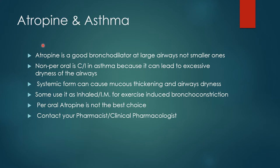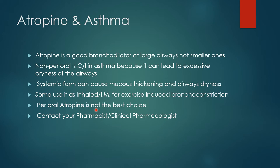Let's go through some facts when it comes to the use of atropine in asthmatic attacks. Though atropine is a good bronchodilator, that will happen at large airways only — it is not a good bronchodilator at smaller airways. Non-parenteral atropine is contraindicated in asthmatic attacks because it can lead to excessive dryness of the airway. The systemic form can cause mucus thickening and airway dryness. Some use it in the inhaled form or given intramuscularly for exercise-induced bronchoconstriction, but parenteral atropine is readily absorbable, so it is not the best choice.